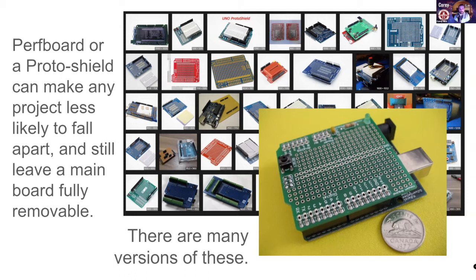Proto shields give you access to the pins of the Arduino so you can route wires, and they usually have a five-volt and ground line right down the middle since you'll probably need a bunch of those. You could solder in five or ten buttons or a bunch of LEDs. The whole shield can still lift off so you can remove the Arduino if you need to — if you fry it and need to replace it, you just swap it out, though it might be good to figure out why it died before you do that.